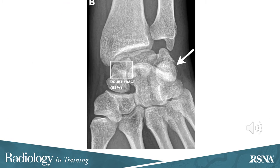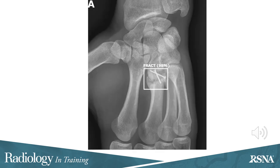Here is a fracture of the scaphoid and a fracture of the triquetrum, both fractures missed by 5 out of 6 unaided readers. Here is a false positive example of a healing fracture at the base of the second metacarpal.